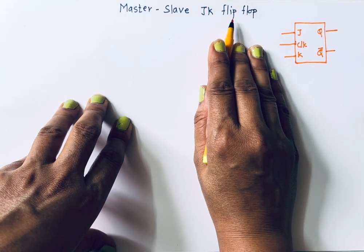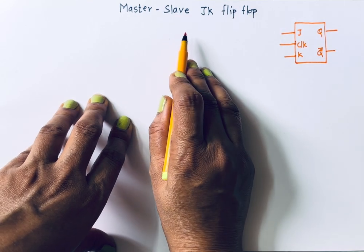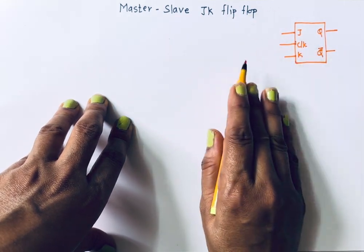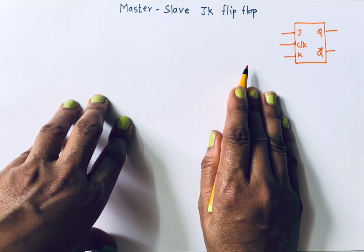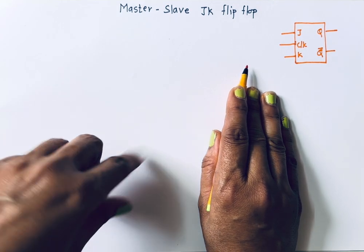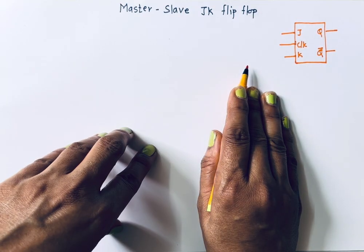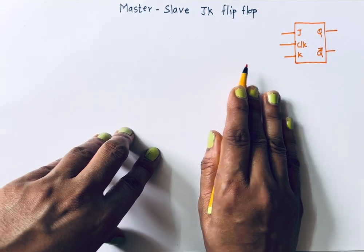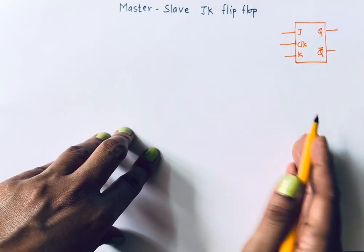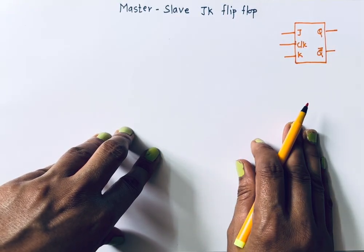That is why the name 'memory cell' is given. You know the SR flip-flop and the normal JK flip-flop. The disadvantage of the SR flip-flop is when both inputs S and R are one — it means when we try to set and reset simultaneously — then the output is invalid. That is obvious; we can't set and reset simultaneously. To overcome that problem, the JK flip-flop was introduced.